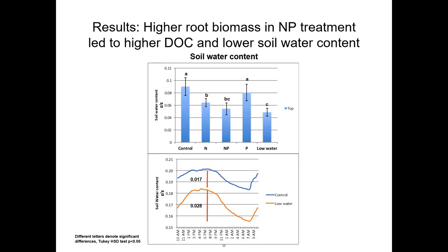Next is soil water content. In an opposite trend, we found that the plus N plus P treatment actually had lower soil water content, similar to the low-watering treatment — probably due to the larger root system and bigger biomass that used more water. Looking at daily fluctuations in soil water content, there were more fluctuations in the low-watering treatment, and we can imagine how the plus N plus P treatment, with a bigger root biomass and a similar watering regime as other treatments, also had higher fluctuations in soil water content.